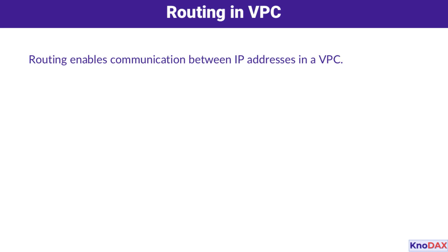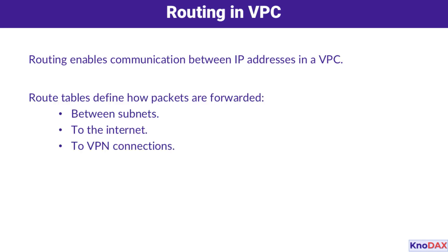Let's begin by understanding the foundation of routing in a VPC. Routing is what enables communication between IP addresses within a VPC. At the heart of this process are route tables. These tables define how packets of data are forwarded, whether it's between subnets, to the internet, or to VPN connections. Every VPC comes equipped with a default route table to get you started.